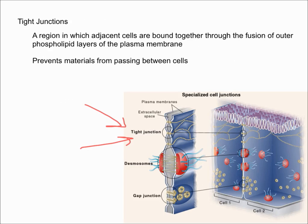First, we're going to talk about tight junctions. Tight junctions are a region in which adjacent cells are bound together through the fusion of the outer phospholipid layers of the plasma membrane.